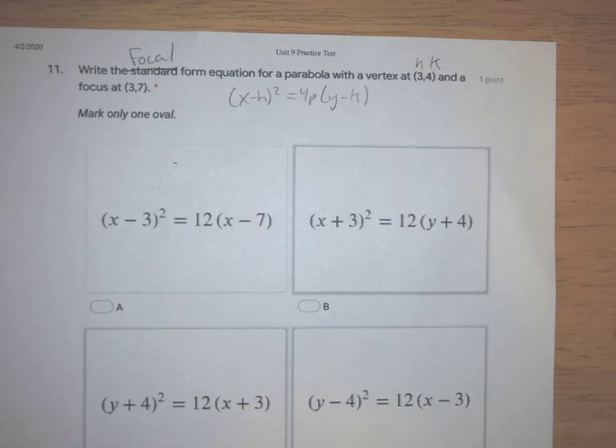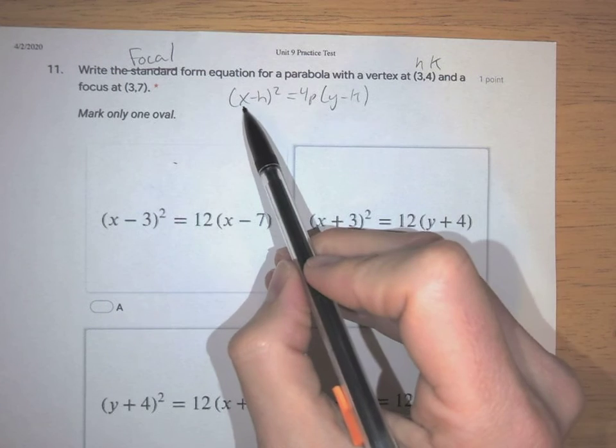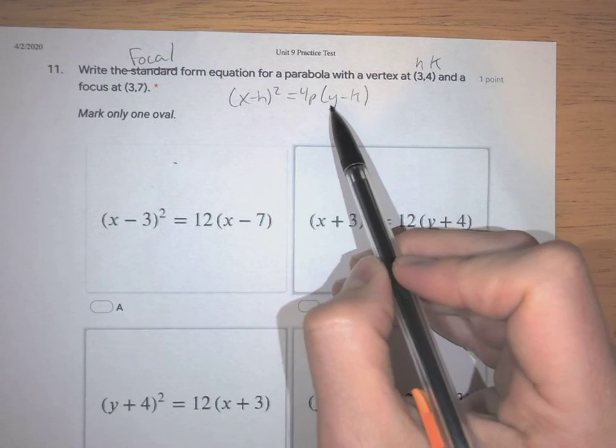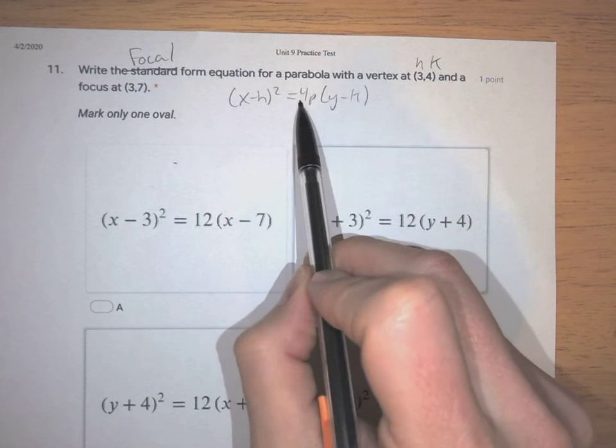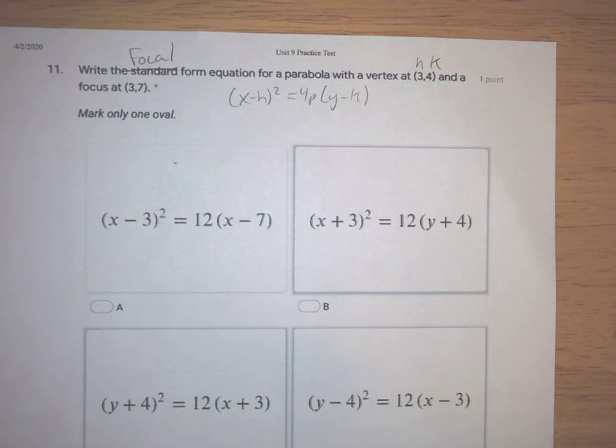If it was opening left or right, we would have a (y - k) here, and then the (x - h) would be on this side. If this was opening down, that would be negative, right? So this is the version that we want.